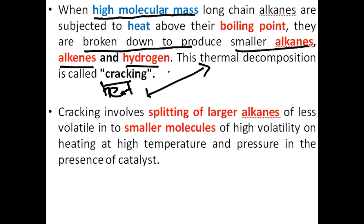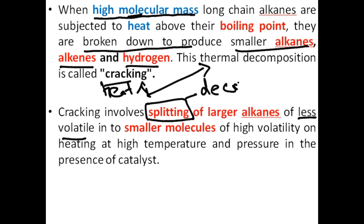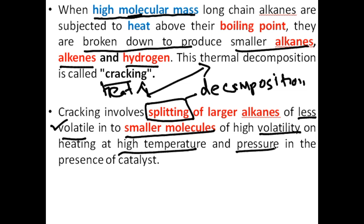We call it thermal cracking because we have used heat in it. The heavy molecules have greater mass — basically these molecules are less volatile, and less volatile molecules are not efficient. So we cause their splitting up, that is simply known as decomposition. In this decomposition, the smaller molecules we get are more volatile as compared to the heavy molecules. For that purpose we use high temperature and pressure, and when high temperature and pressure are applied, the heavy molecules break down into smaller molecules.